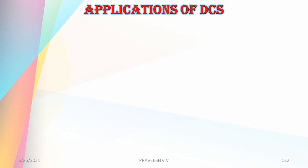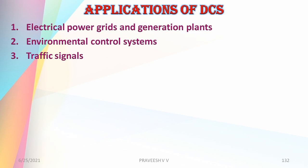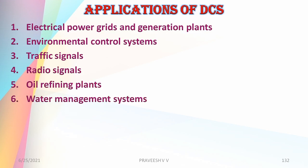Applications of DCS include electrical power grids and generation plants, environmental control systems, traffic signals, radio signals, oil refining plants, water management systems, and chemical plants.